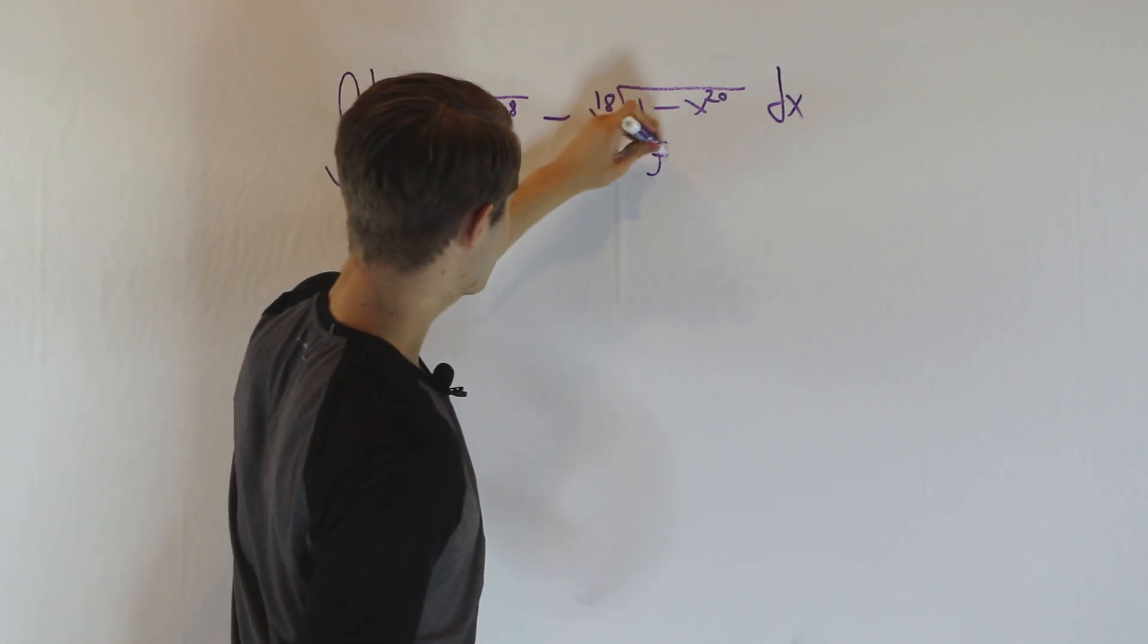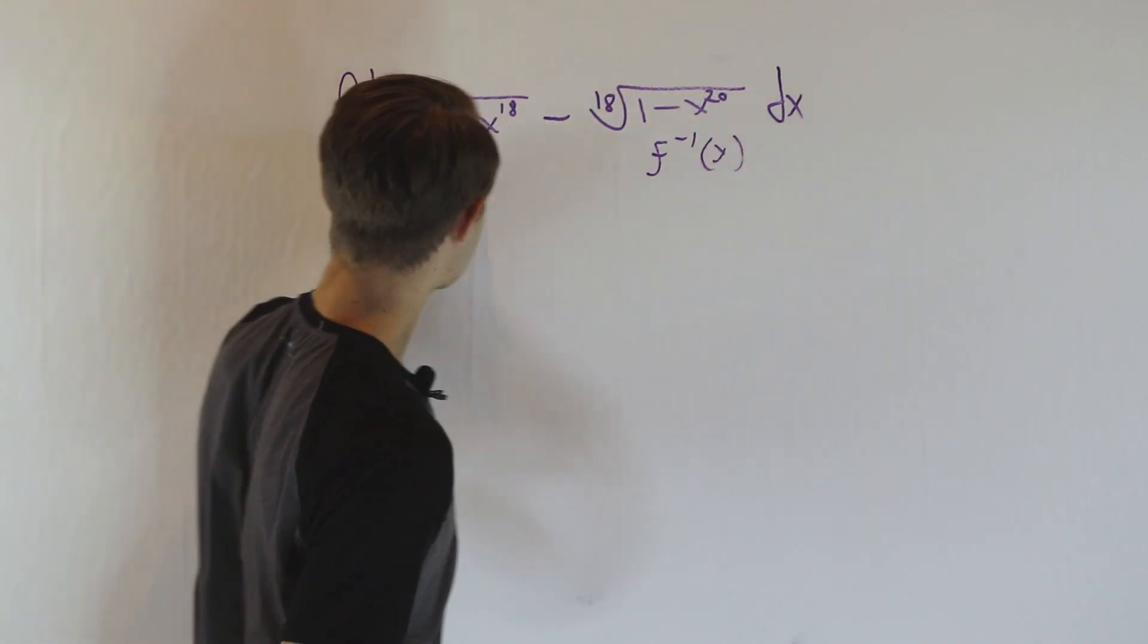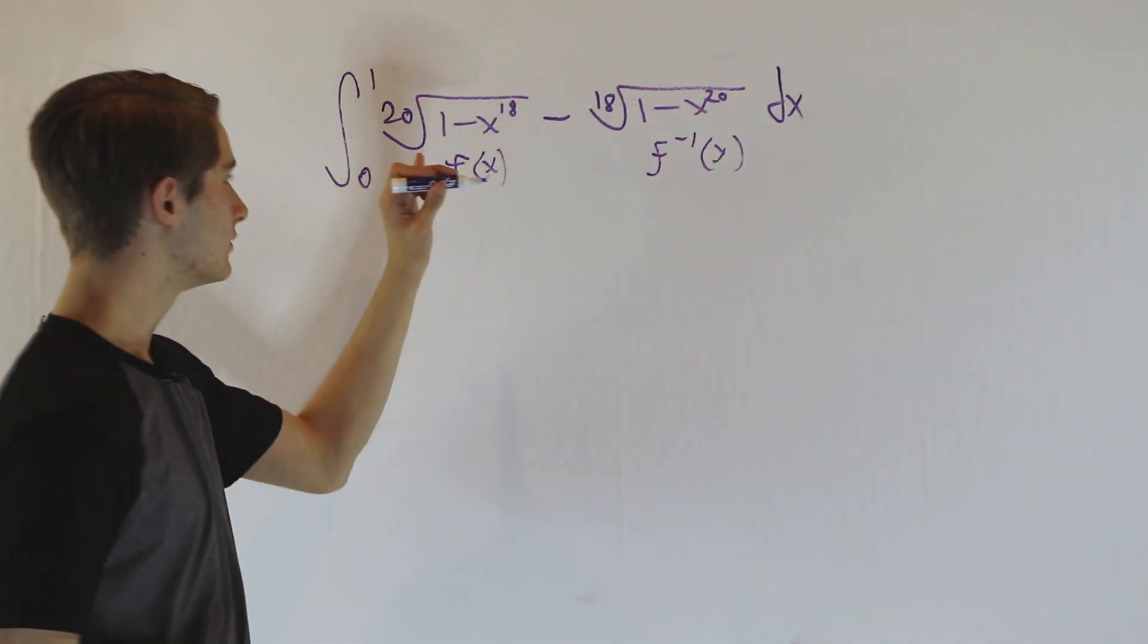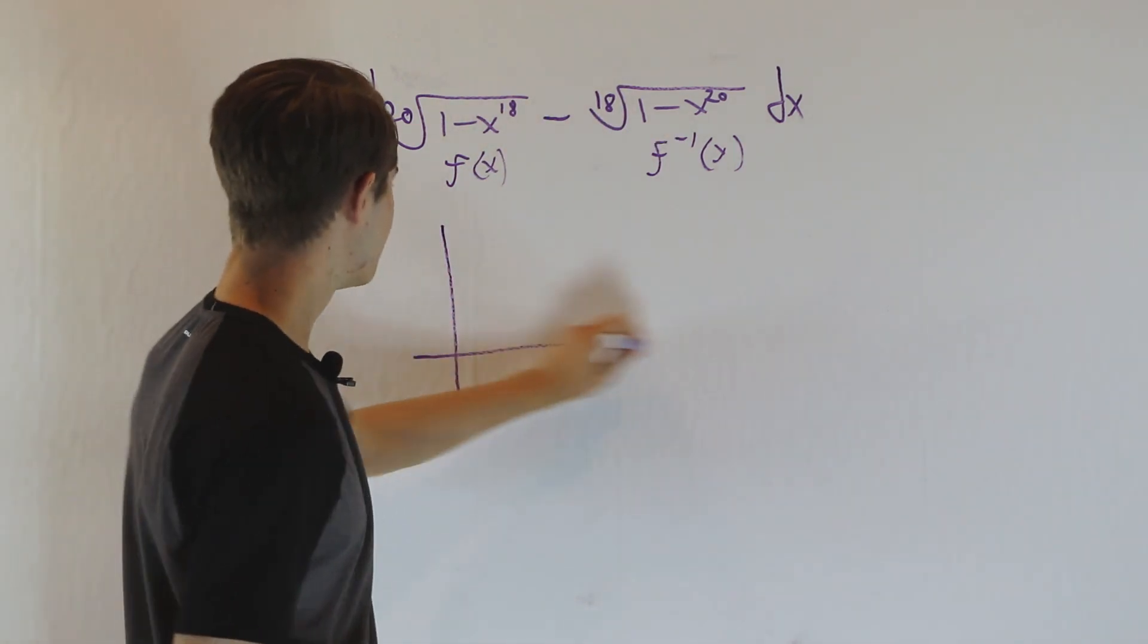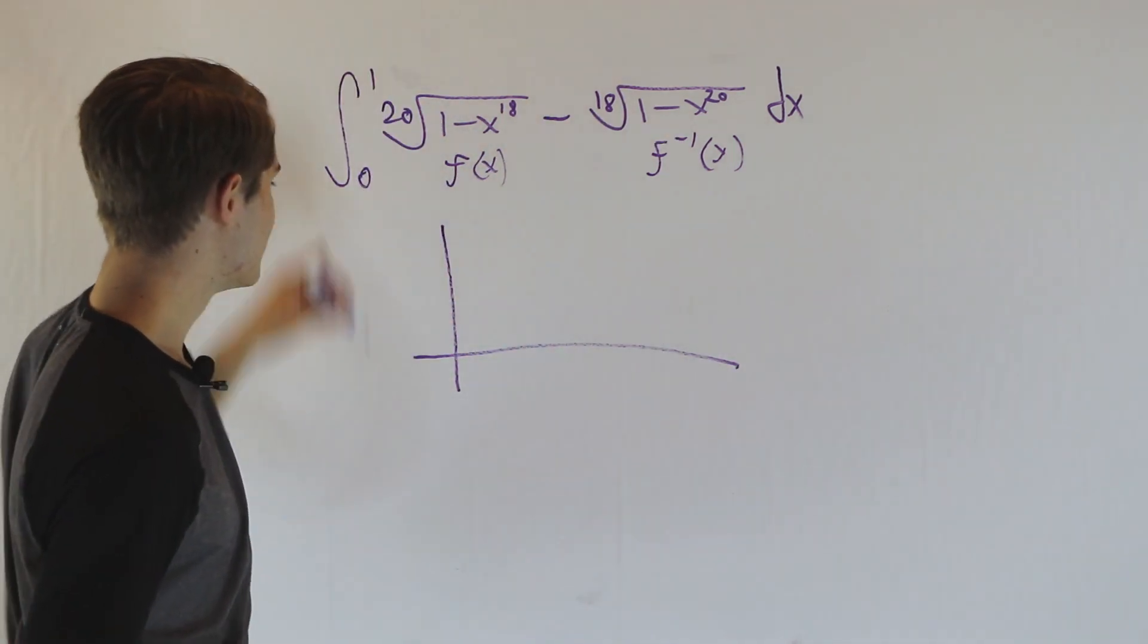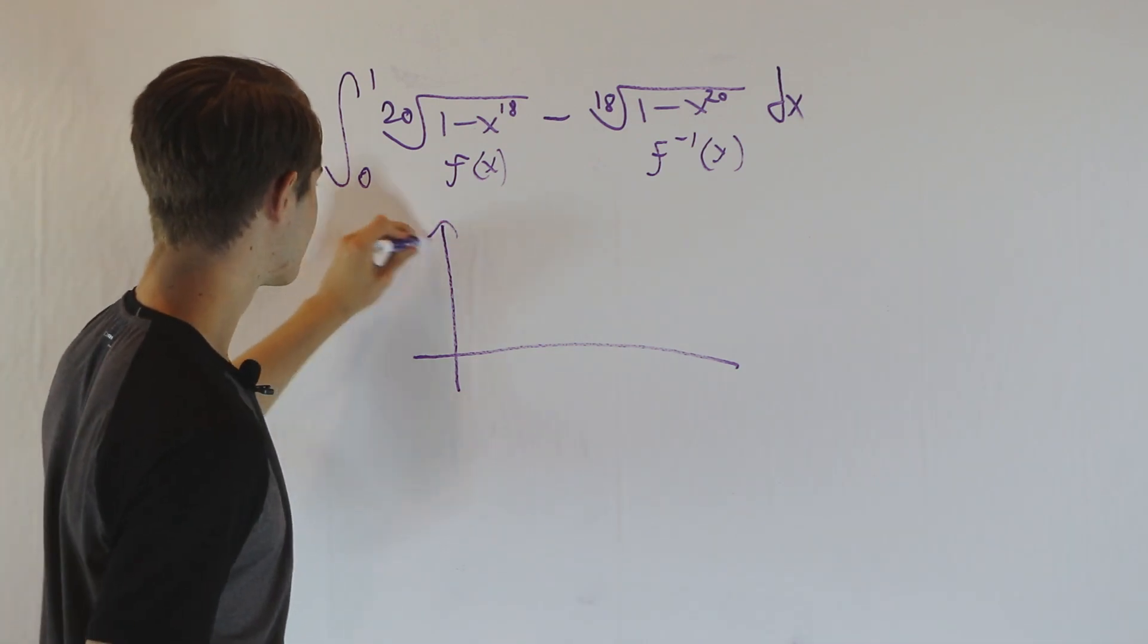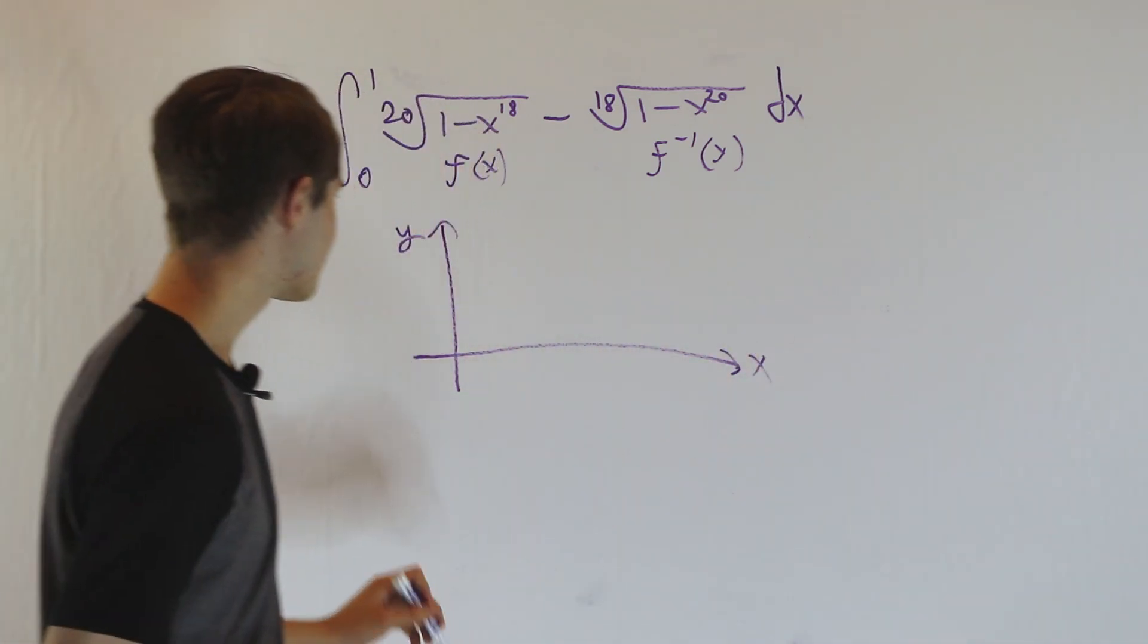So this is f, and this is f inverse. Let's look at the graph of this function. We want to graph the 20th root of 1 minus x to the 18th. This is y, and this is x.